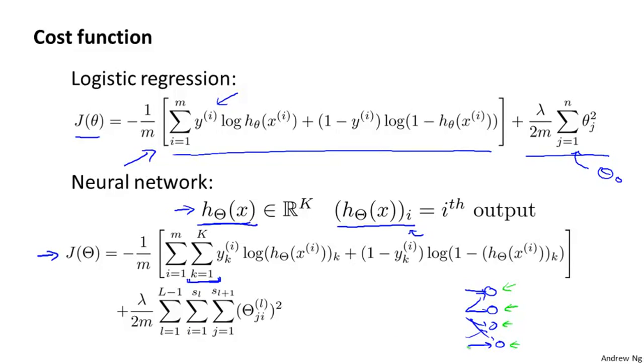And so you notice in particular that this applies to y_k, h_k, because we're basically taking the k-th output unit and comparing that to the value of y_k, which is that one of those vectors saying what class it should be.